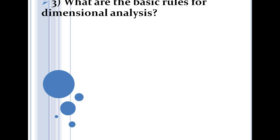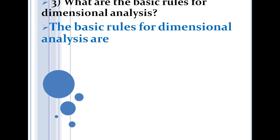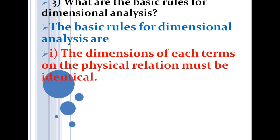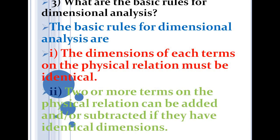The next question: what are the basic rules for dimensional analysis? In the application of dimensional analysis we use the principle of homogeneity of dimensions — that is the basic rule. The basic rules are: first, the dimensions of each term in a physical relation must be identical; second, quantities can be added or subtracted only if they have the same dimension.